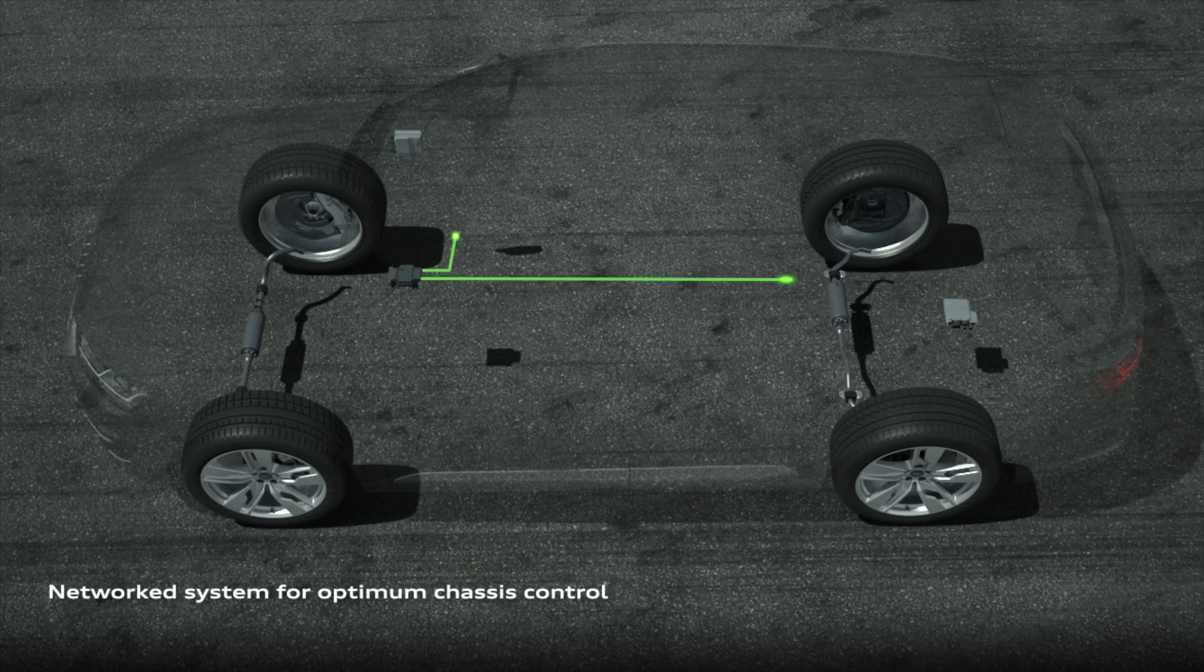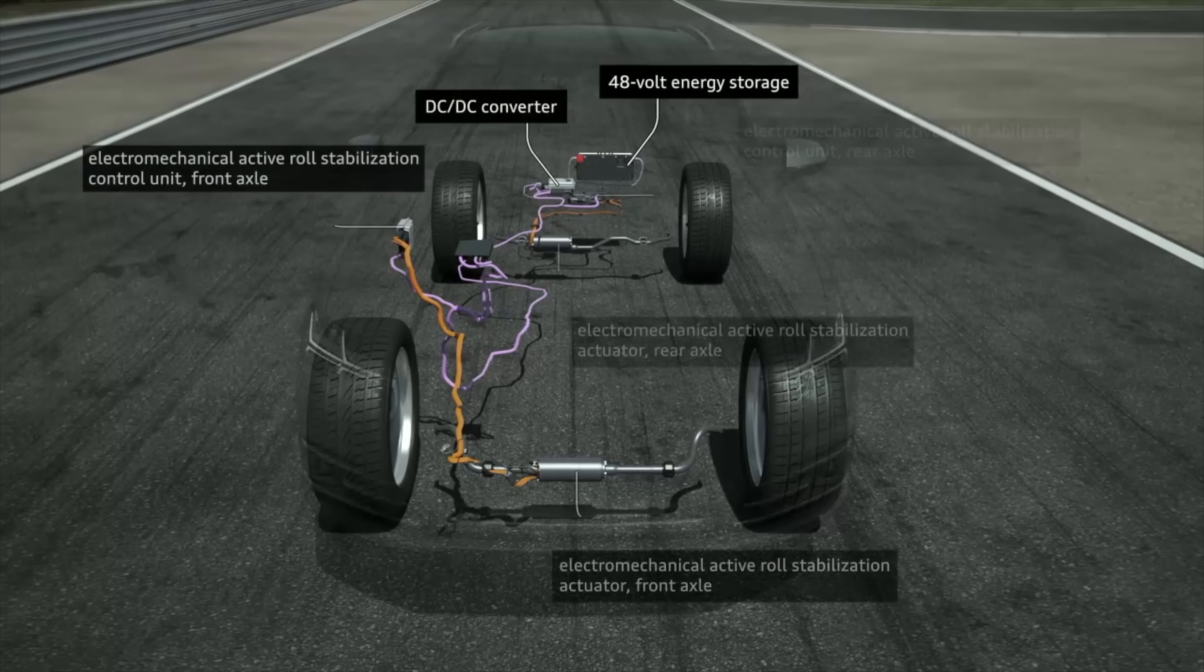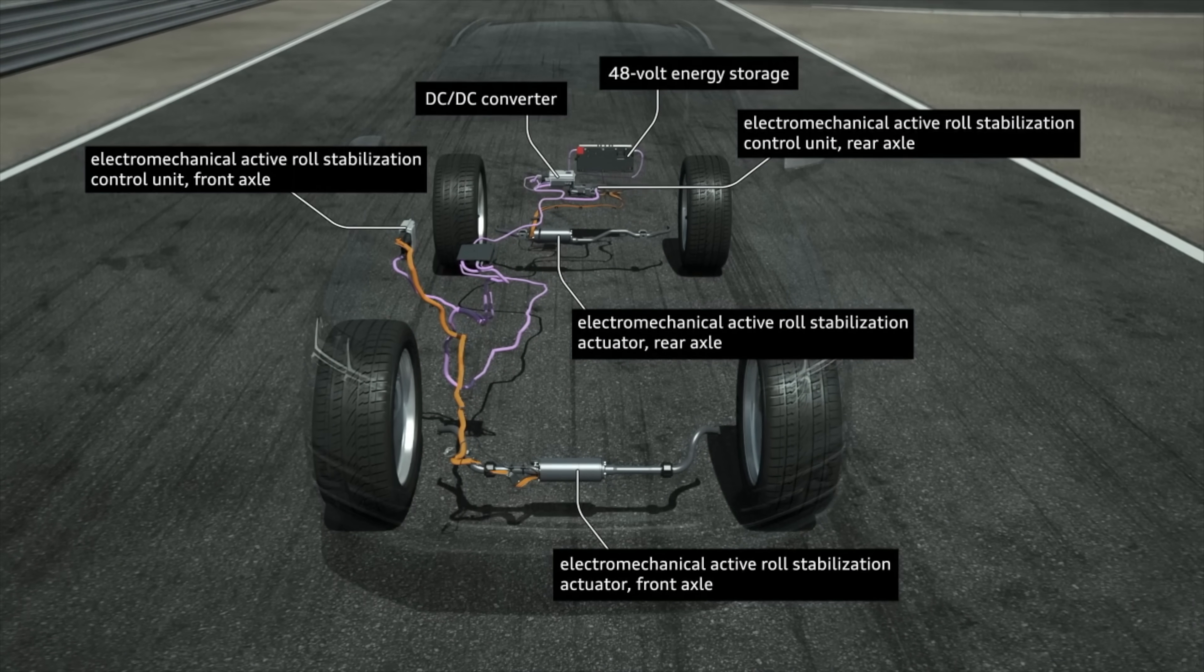Hello everyone and welcome. In this video we're talking about how Audi is eliminating body roll in their SQ7 through the use of two electronic sway bars, one in the front and one in the rear.